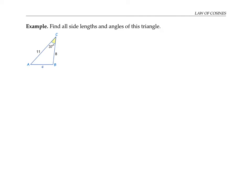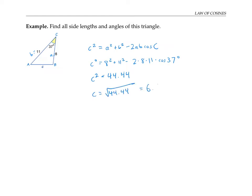Let's use the law of cosines to find the side lengths and angles of this triangle. By convention, I'm going to call the side opposite angle B, side little b, and the side opposite angle A, side little a. Since we know two side lengths and the angle between them, we have all the information on the right side of the law of cosines. I'll plug that in and use a calculator in degree mode to find that c squared equals 44.44. Taking the square root, I get that c equals 6.67.